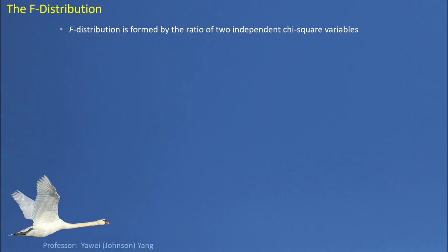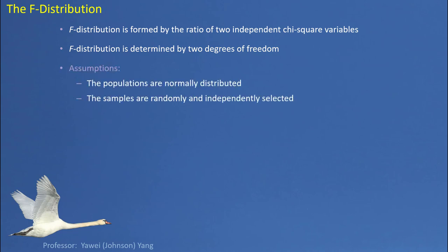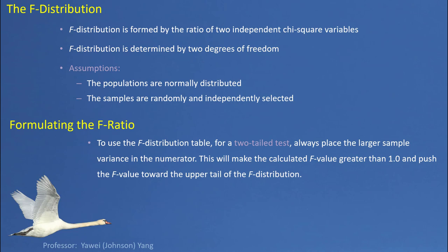F-distribution is formed by the ratio of two independent chi-square variables, and is determined by two degrees of freedom. The basic assumption is that we assume two populations are normally distributed and the samples are randomly and independently selected. For convenience, we could always place the larger sample variation in the numerator on top of the ratio and the smaller one at the bottom, so the F-test statistic value will be greater than one.